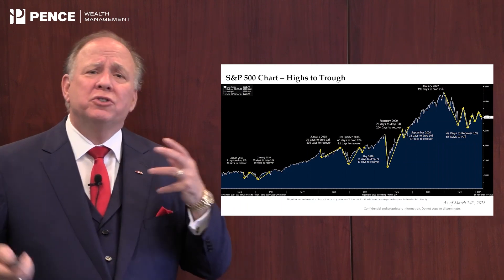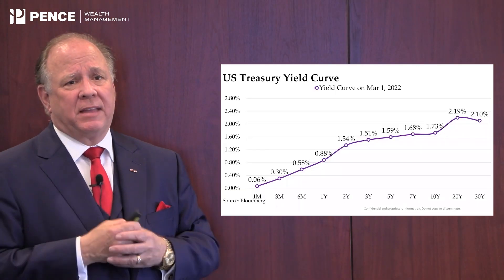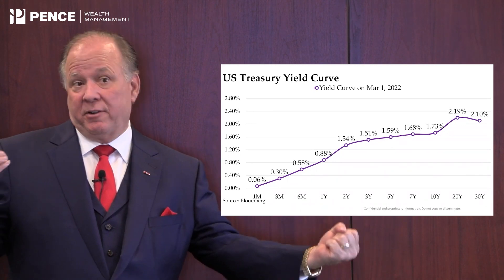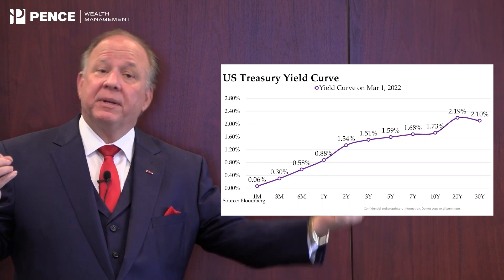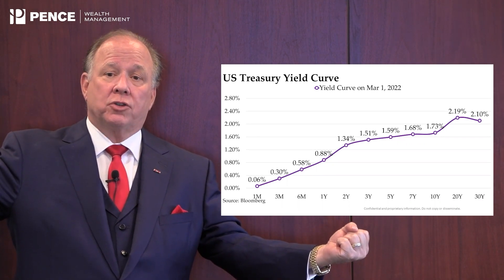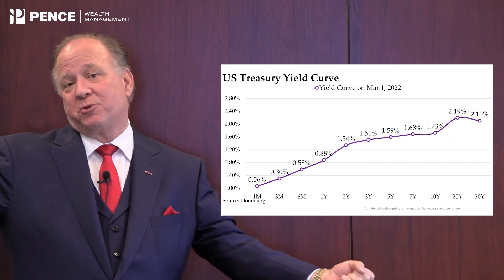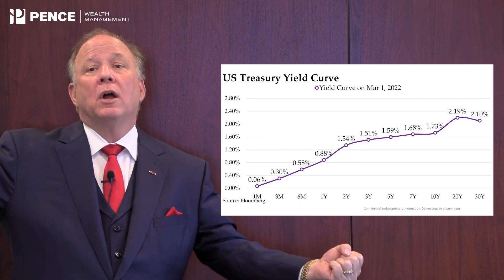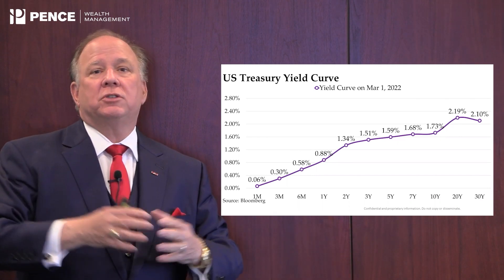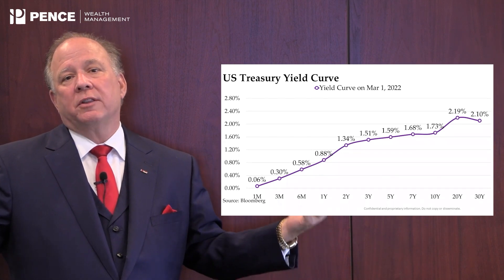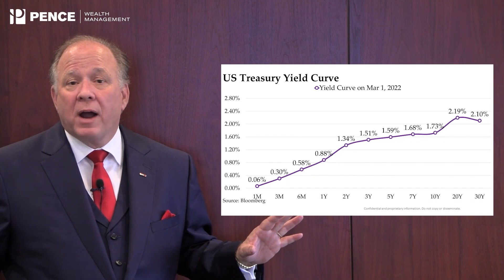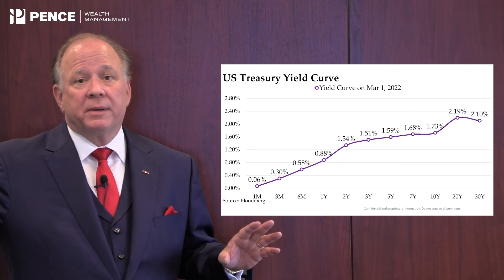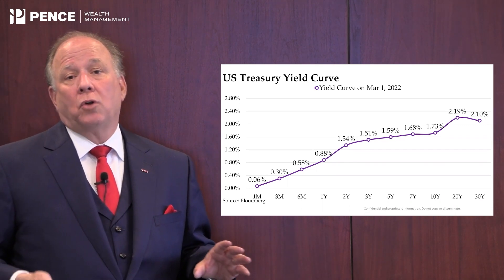You'll hear a lot of news about the yield curve. A normalized yield curve means that short-term interest rates are typically lower than long-term rates. Typically you'd see a short-term interest rate for one month being lower than money tied up for 30 years, because people demand greater interest on money held longer. The interest rate is nothing more than the price of money — people demand a higher yield for money long-term.